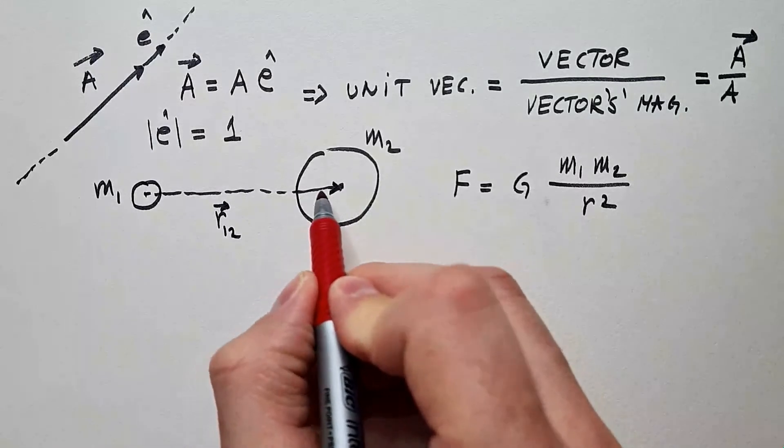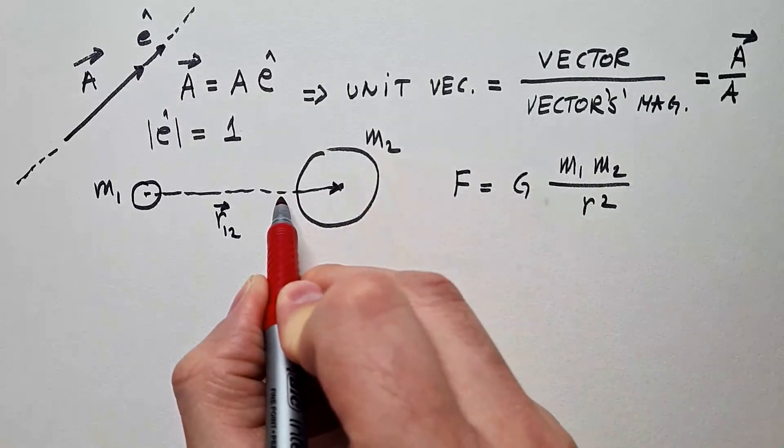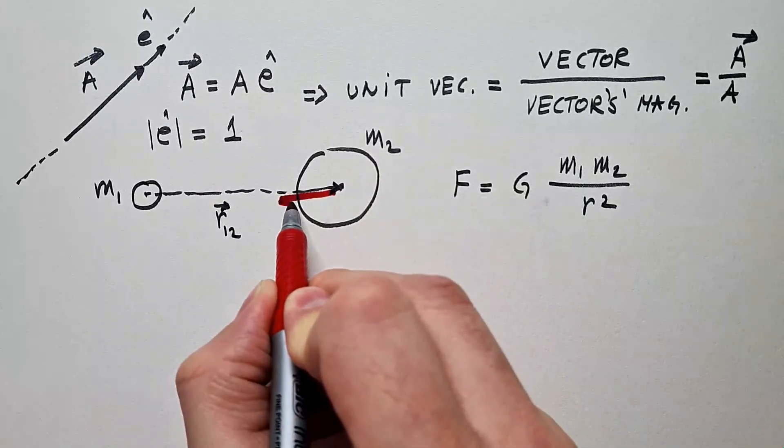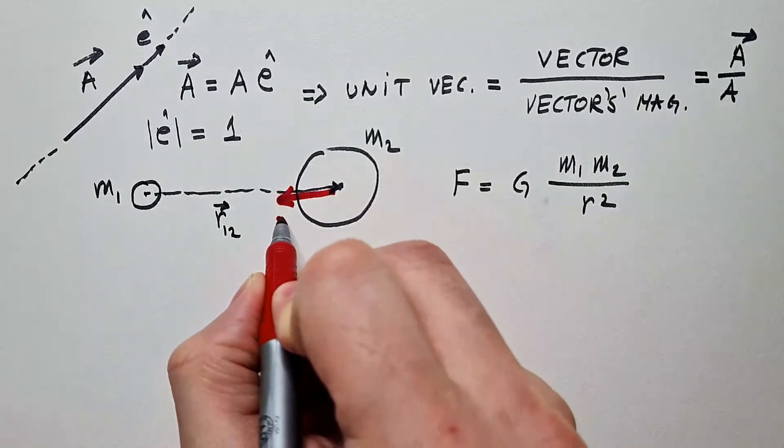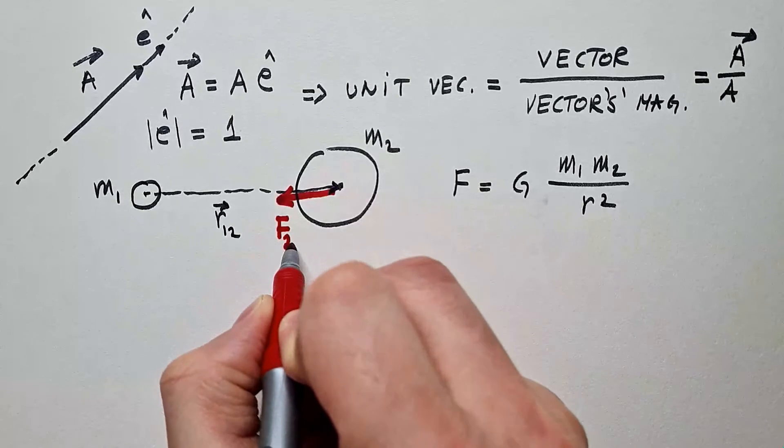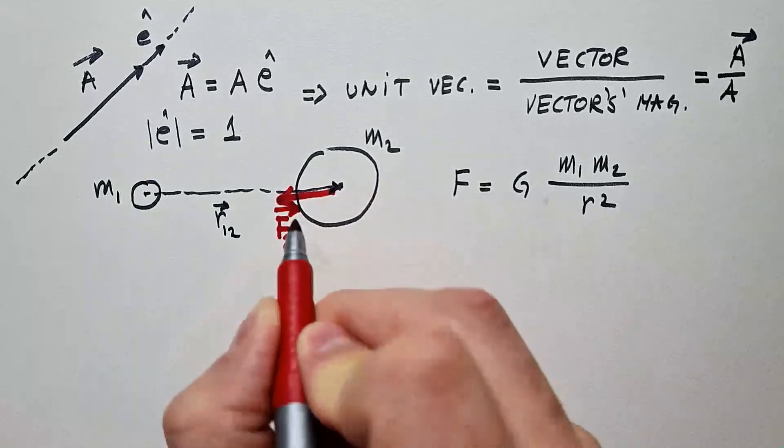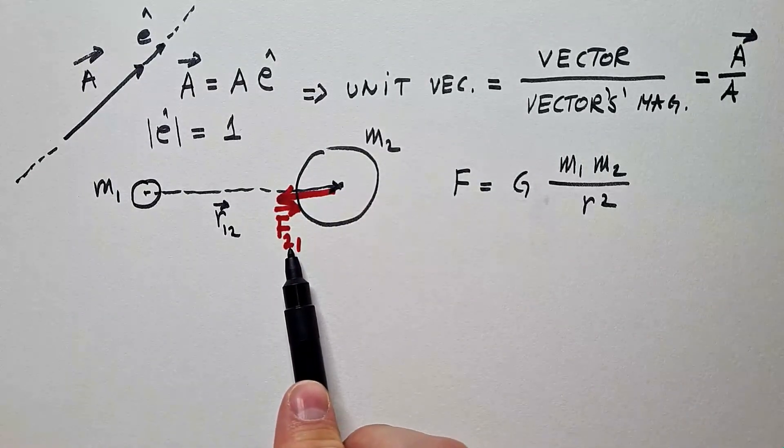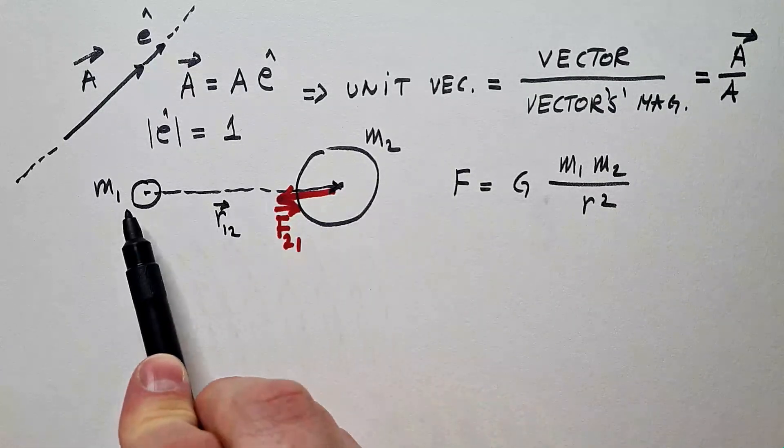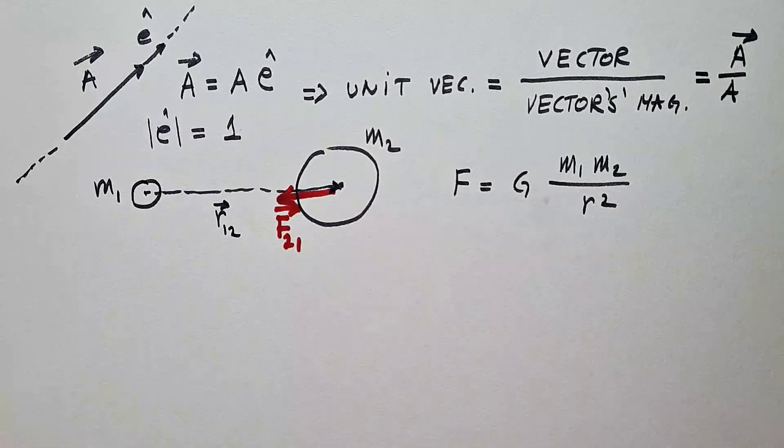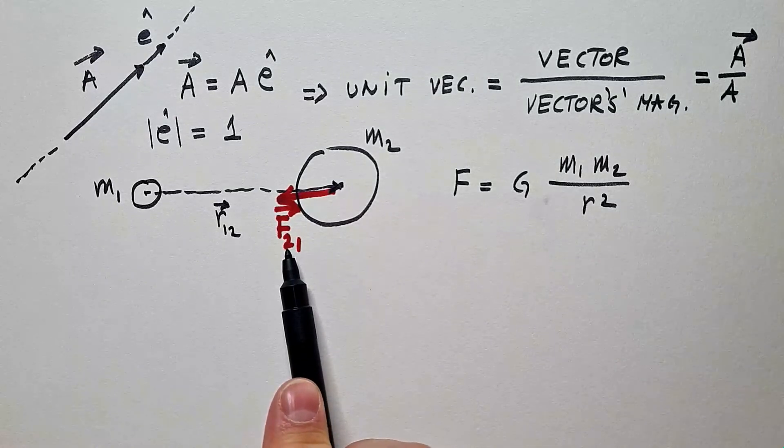So therefore, there is force on this object M₂, like so. And I will call this force F₂₁. F₂₁ is force on object 2 by object 1. That's the meaning of these subscripts.